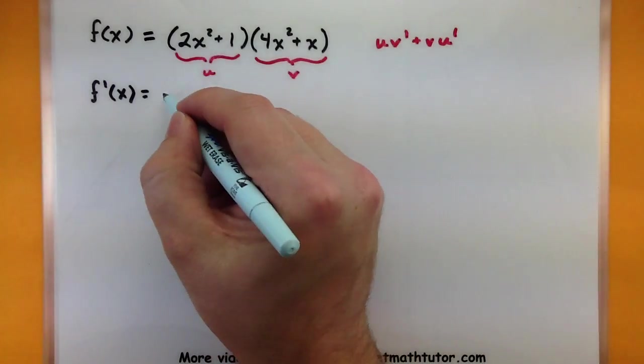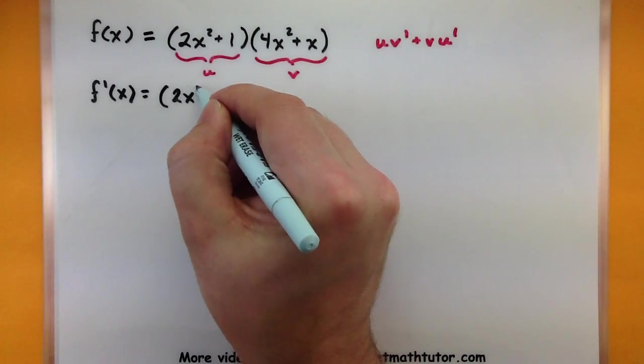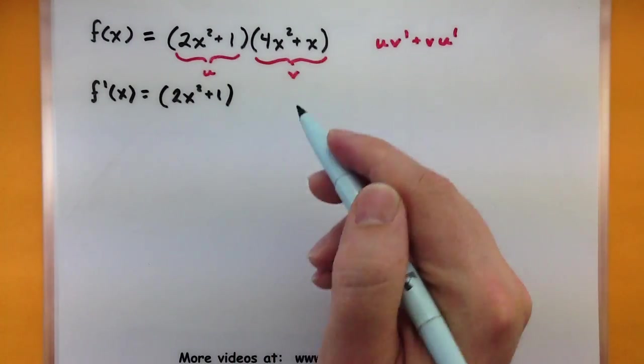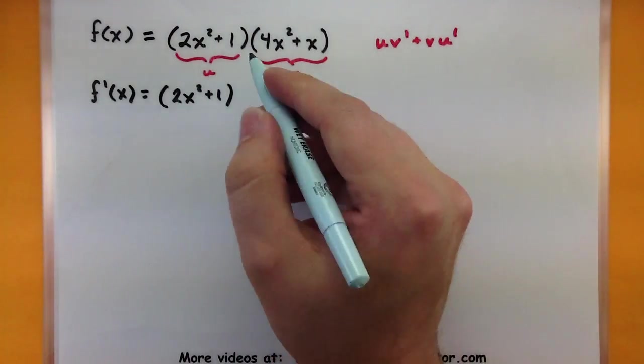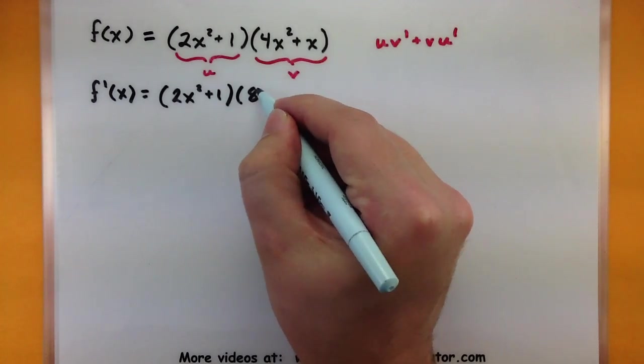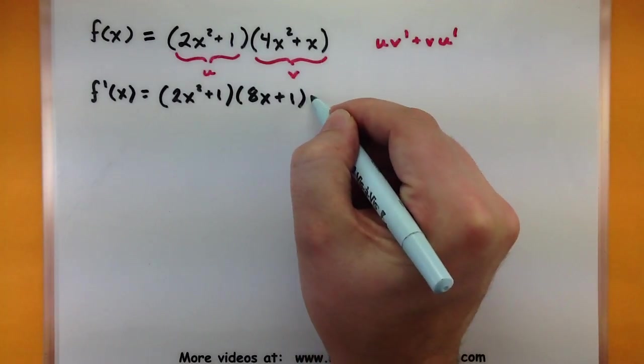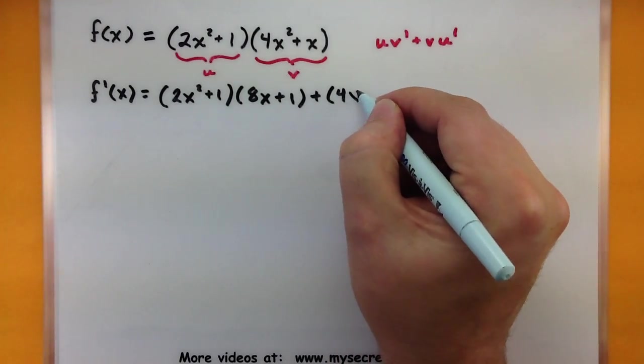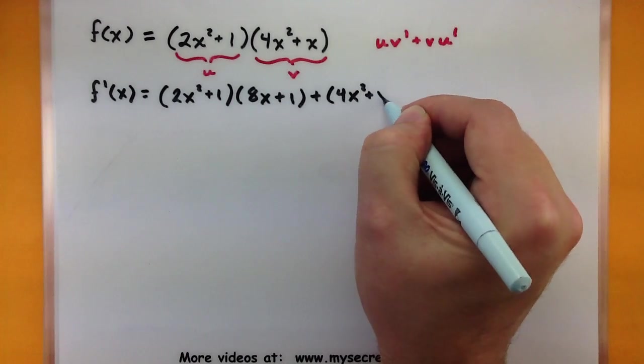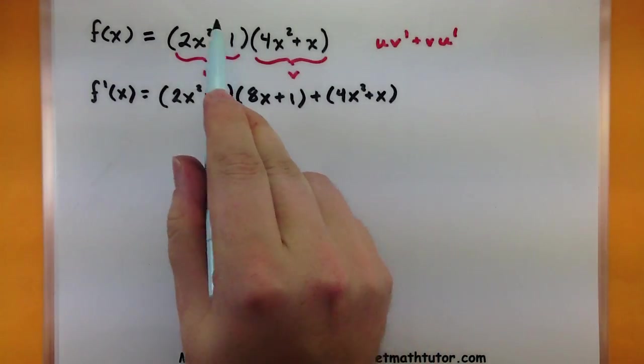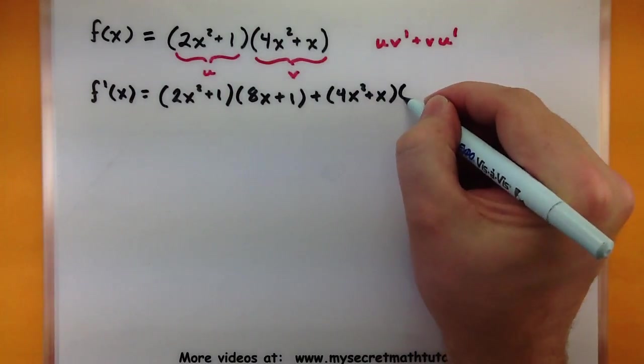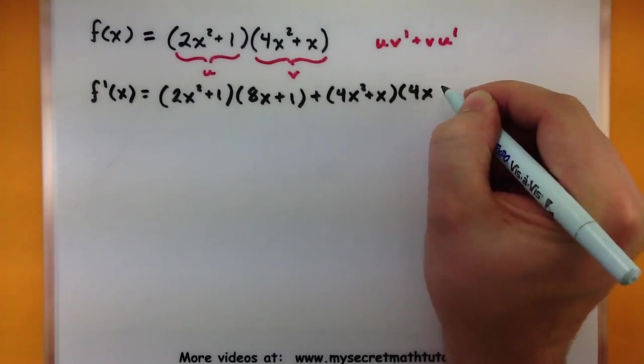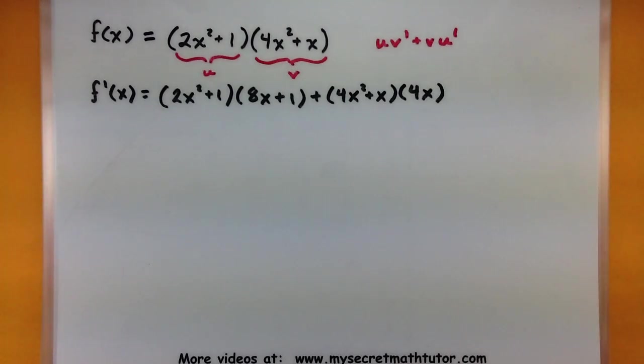Let's see what that looks like. So my first function just as it is. 2x squared plus 1 multiplied by the derivative of this one. That would be an 8x plus 1 plus. Now we do our second function just as it is. Multiply by the derivative of the first one. 4x. And then that one's done.